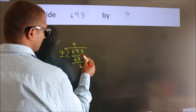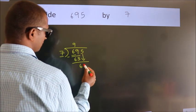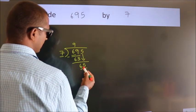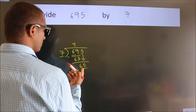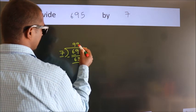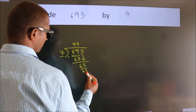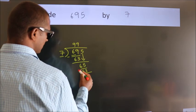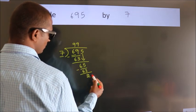After this, bring down the beside number, so 5 down, making 65. A number close to 65 in the 7 table is 7 times 9, which is 63. Now we subtract. We get 2.